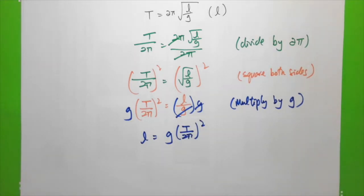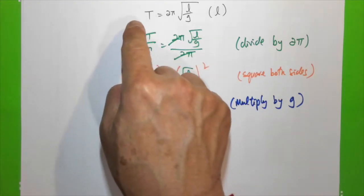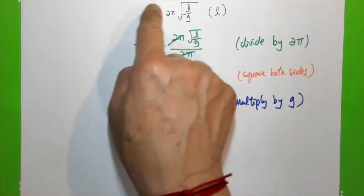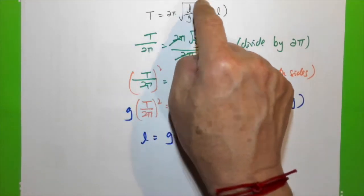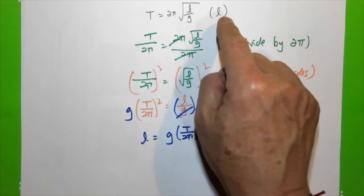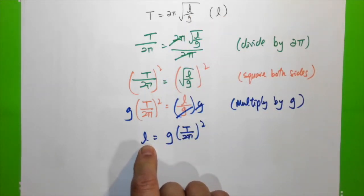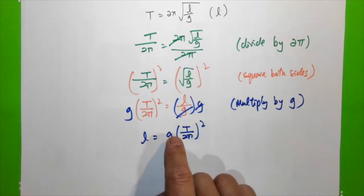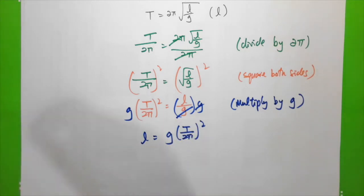So I've rearranged T = 2π√(l/g) and made l the subject: l equals g times (T over 2π), all squared.